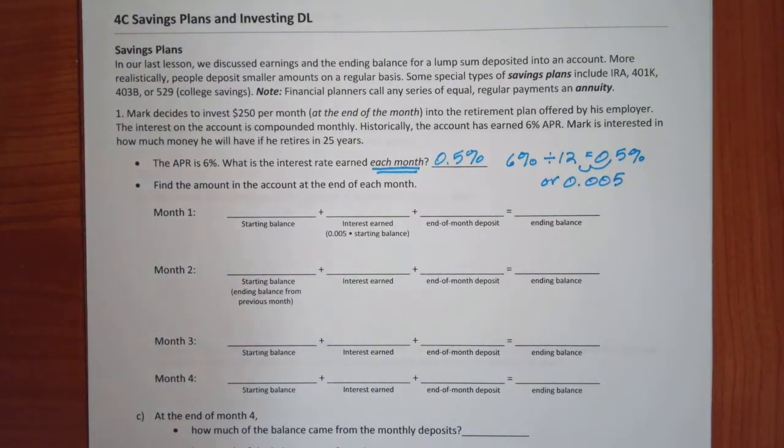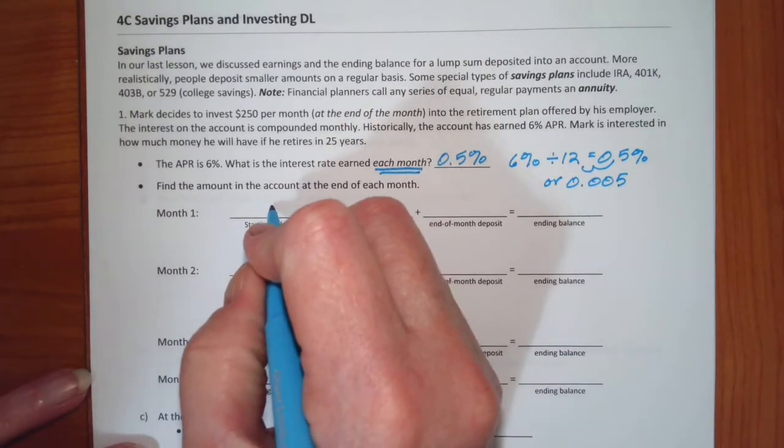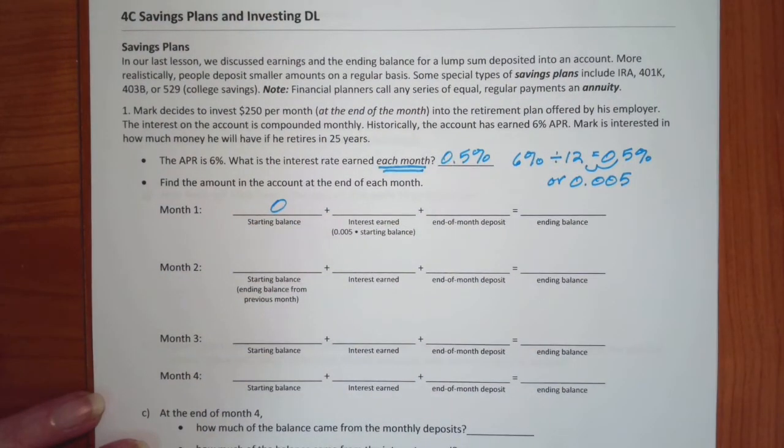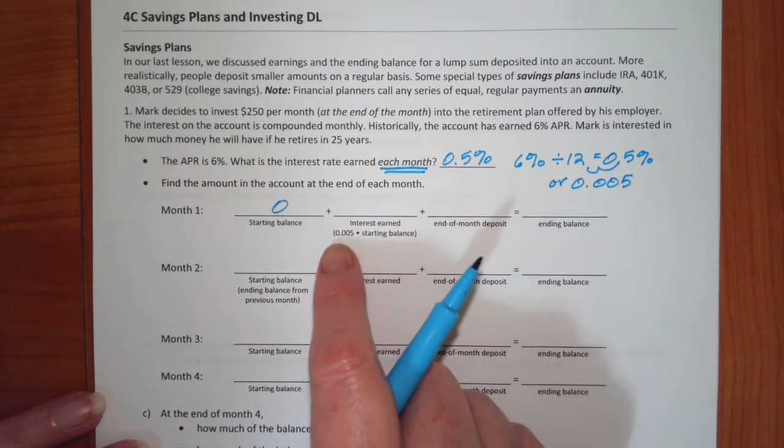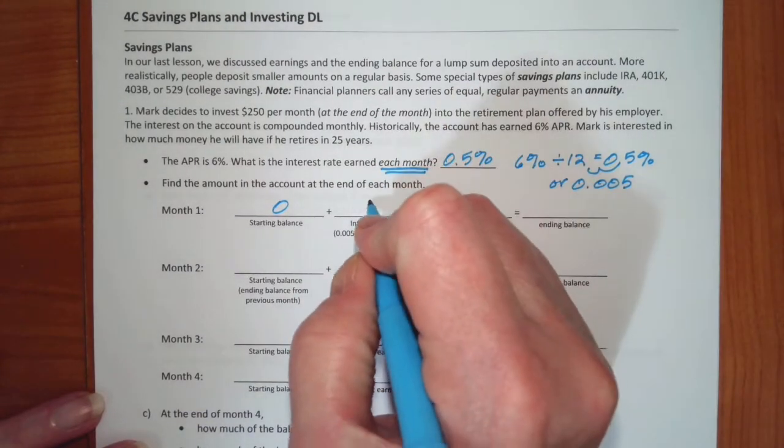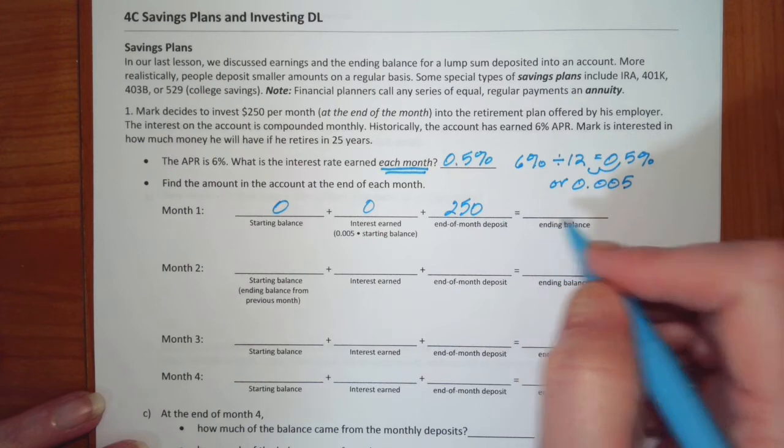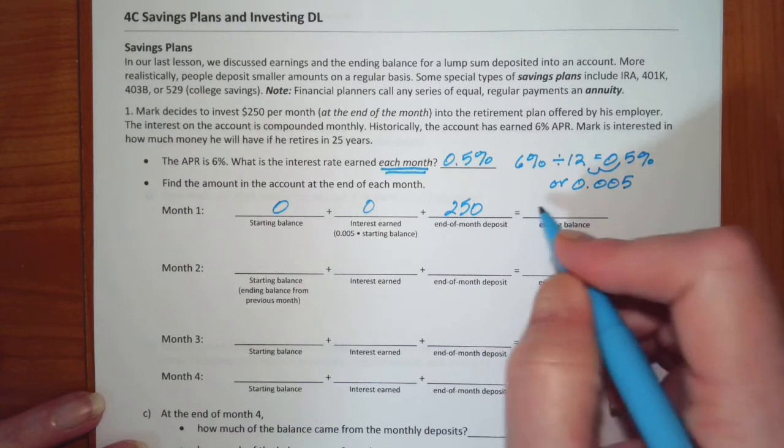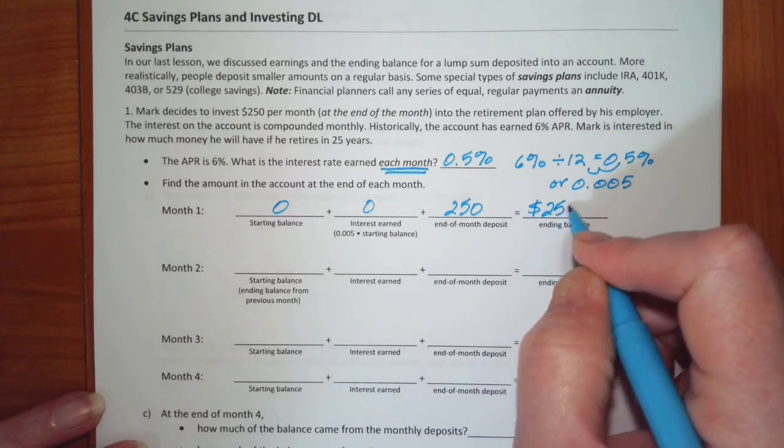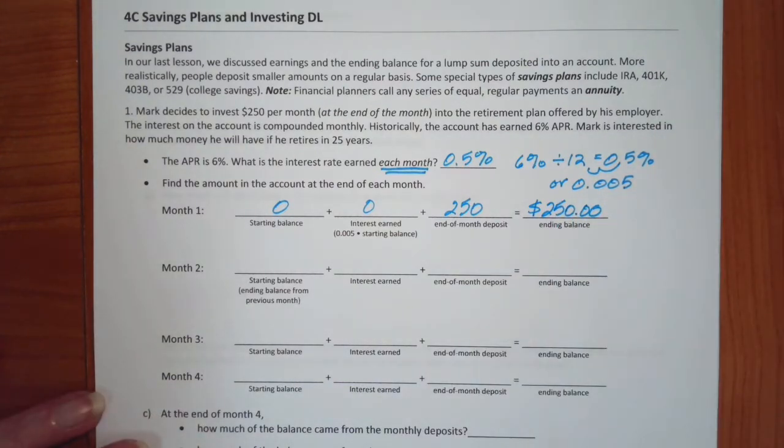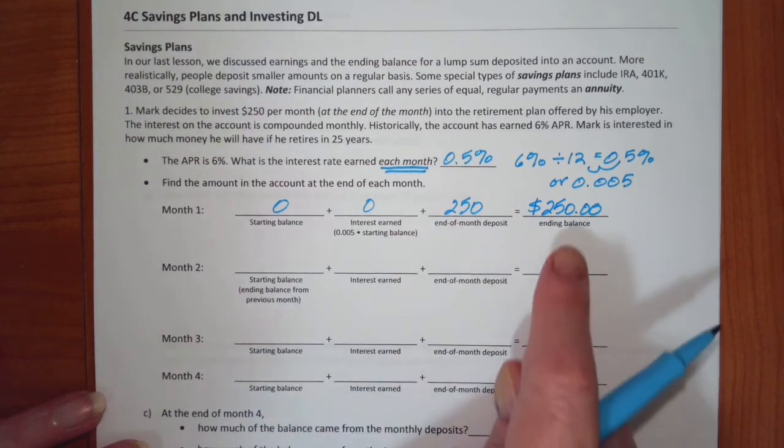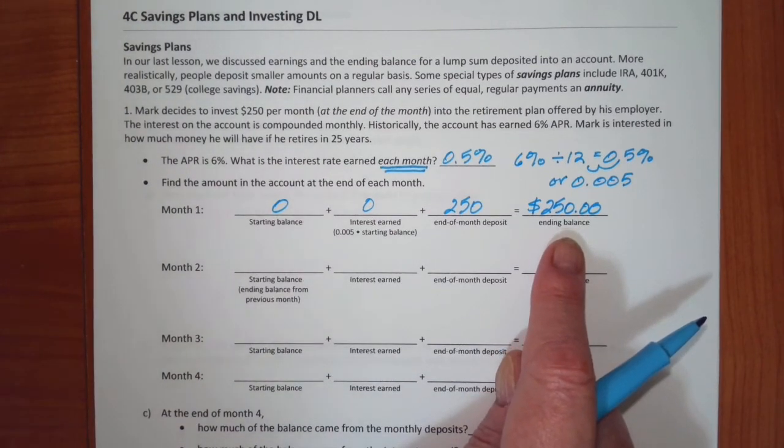Now, we're going to be doing these as a decimal as always. So, if I move this two places to the left, this is 0.005. So, let's do a few months of this and see exactly how it works. We're not going to have to do this, of course. We're going to be able to use the formula. But how is this all coming about? Okay, so for month one, he is putting in money at the end of the month, so he starts with 0. Interest earned, if you multiply 0.005 times 0, you still get 0. And here he makes his first deposit of $250. So, his ending balance is going to be $250.